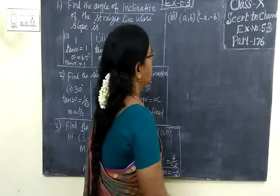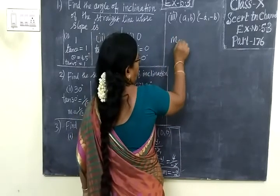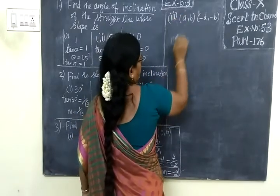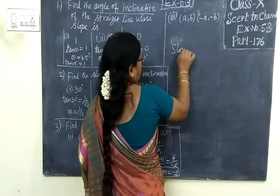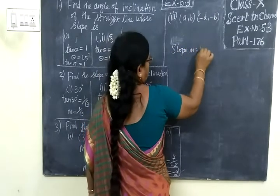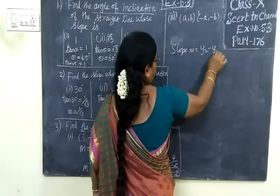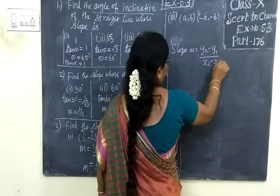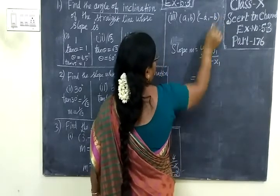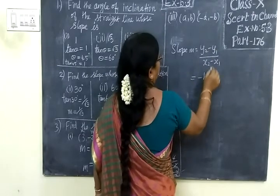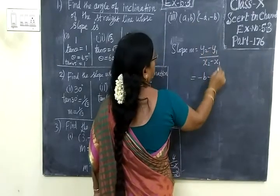Then (a,b) and (-a,-b) question. Slope m equals (y₂ - y₁)/(x₂ - x₁). This is y₂ which is -b minus y₁ which is b.